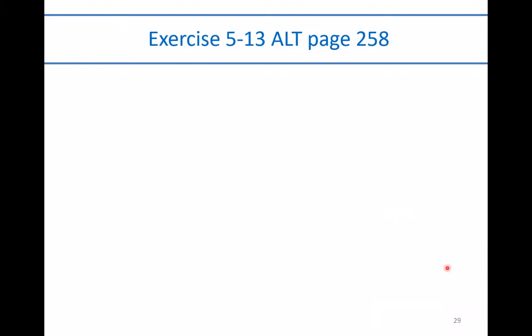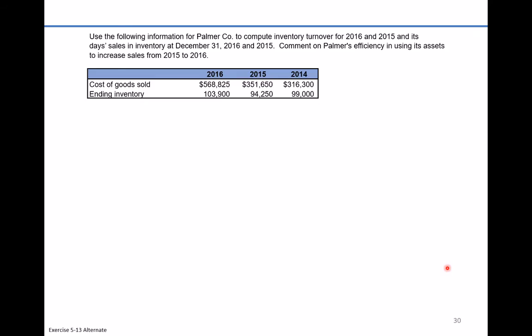Welcome back. Today we're taking a look at an alternate version of exercise 5-13 on page 258 from chapter 5, reporting and analyzing inventories. This is going to cover the inventory turnover and day sales in inventory concept. It says to use the following information for Palmer Company to compute inventory turnover for 2016 and 2015, and day sales in inventory at December 31st, 2016 and 2015, then comment on Palmer's efficiency in using its assets to increase sales from 2015 to 2016.